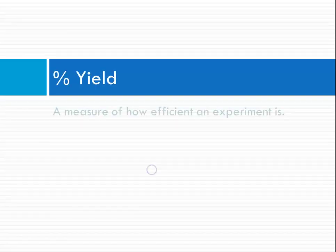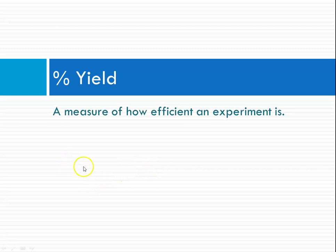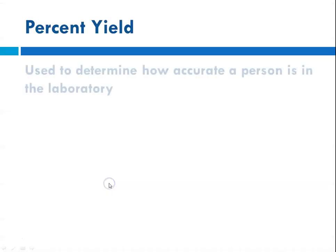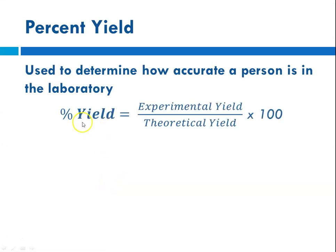So what is percent yield? It is a measure of how efficient an experiment is. Percent yield is used to determine how accurate a person is in the laboratory, and percent yield is defined as the experimental yield divided by the theoretical yield times 100.